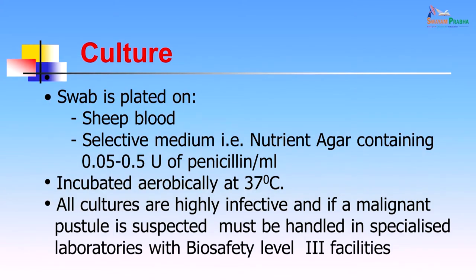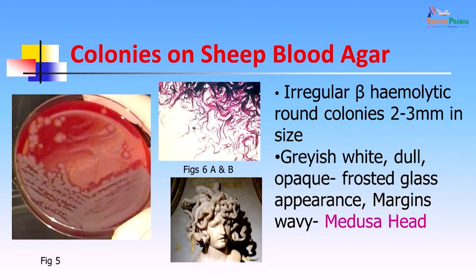For culture, a swab was plated on sheep blood agar and a selective medium — nutrient agar containing penicillin. It was incubated aerobically at 37 degrees centigrade. All cultures are highly infective; if malignant pustule is suspected, they must be handled in specialized laboratories with biosafety level 3 facilities and all work must be done in the biosafety cabinet. The colonies on sheep blood agar showed irregular beta-hemolytic colonies 2 to 3 millimeters in size with a zone of hemolysis around them.